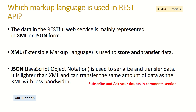Which markup language is used in REST API? There is no bounded language requirement — it depends on the project — but mostly two languages are used: XML and JSON. XML, or Extensible Markup Language, is used to store and transfer data. JSON, or JavaScript Object Notation, is used to serialize and transfer data. JSON is lighter than XML and can transfer any amount of data with less bandwidth.